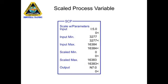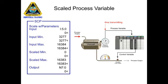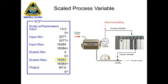For example, when the minimum pressure of 0 psi is measured, a scaled value of 0 is transferred to the SCP output, and when 100 psi is measured, a scaled value of 16383 is transferred to the SCP output.